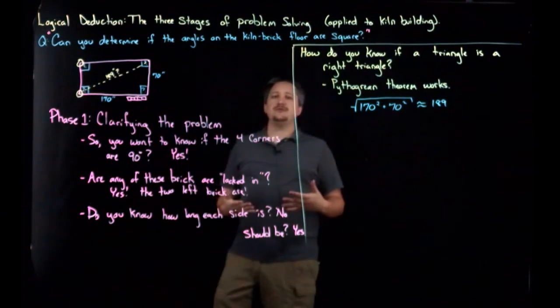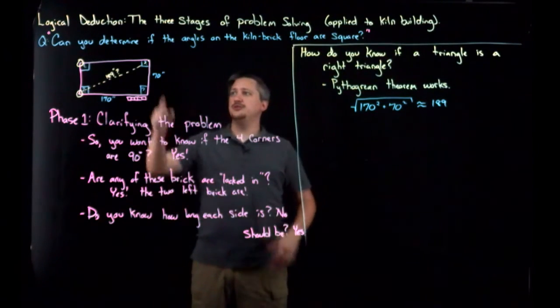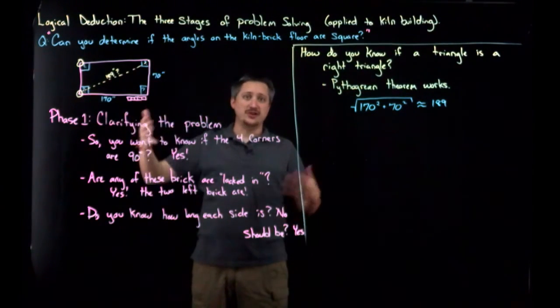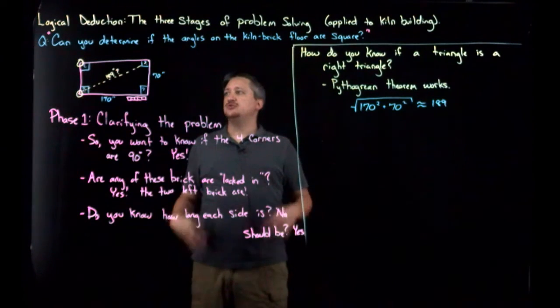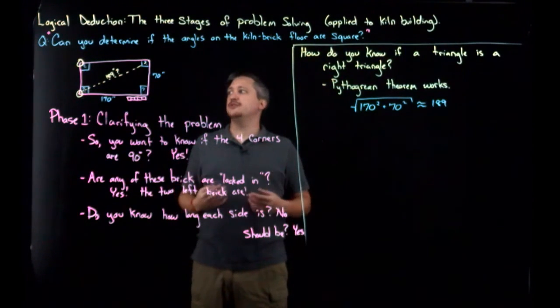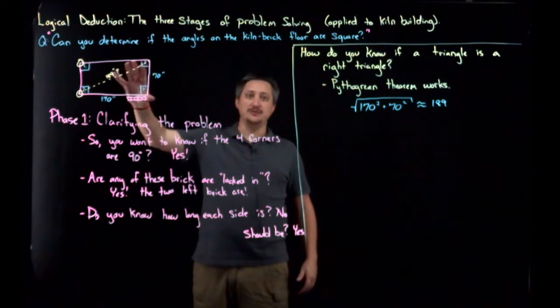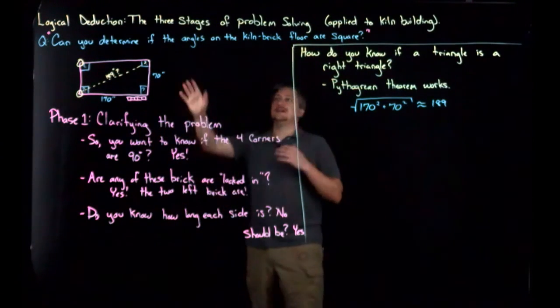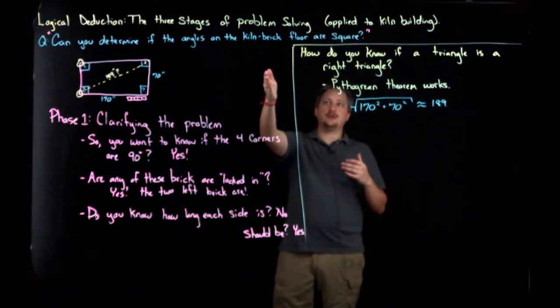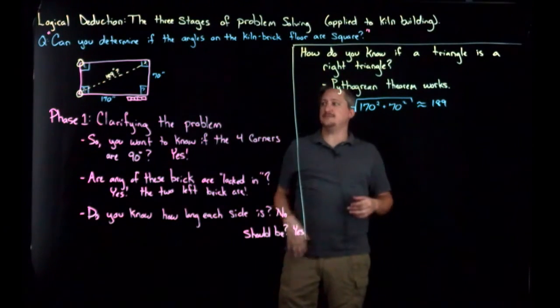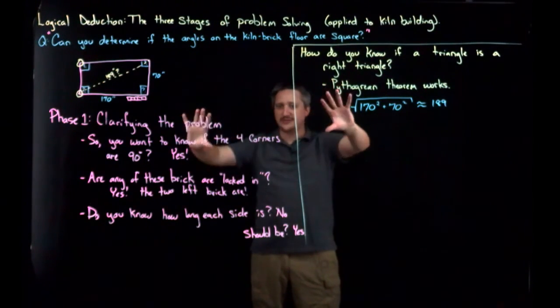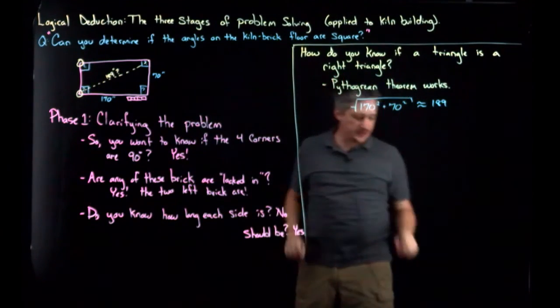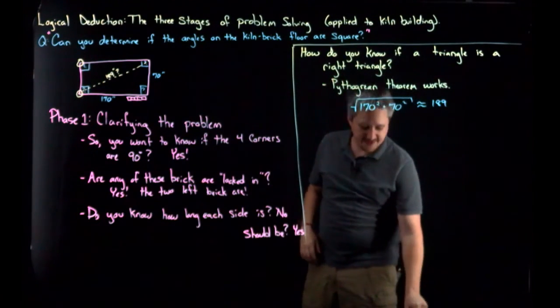And so, this gave a way to determine using just the lengths, because she had a working tape measure. It gave her a method, a mechanism, so that she could actually go about finding out if this thing had square corners. So, I went from, can you determine if the angles on this kiln brick floor are square, to this. Now, I'm going to break down the phases.